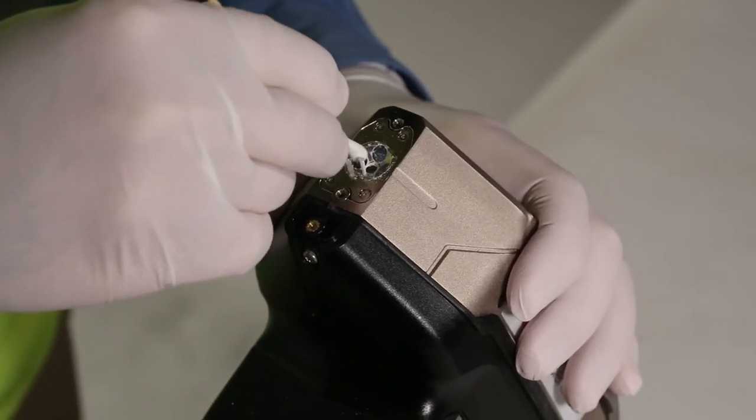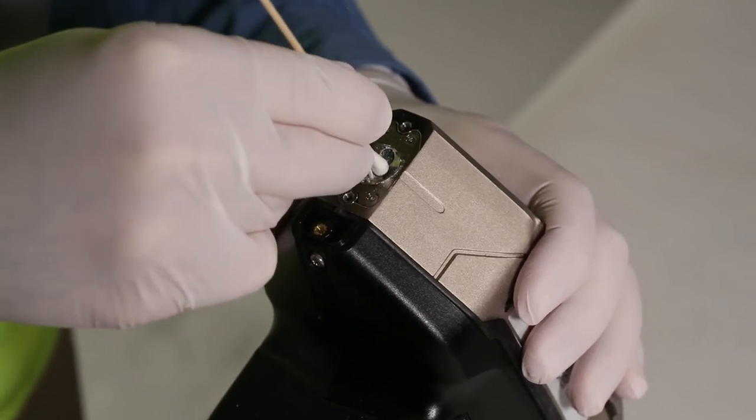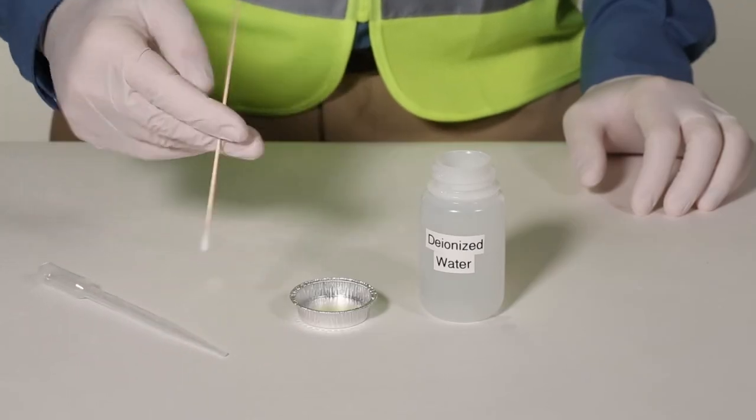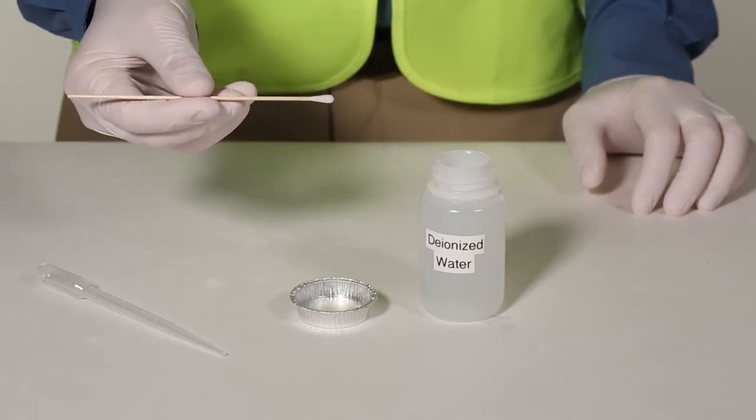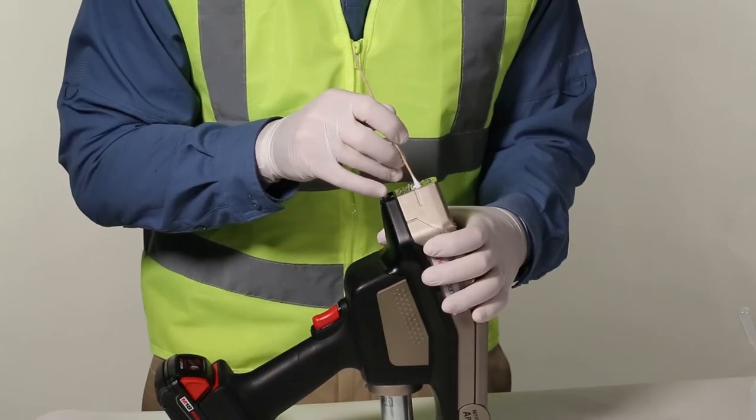Clear any loose or dry cleaning mixture from the sample chamber by using a dry cotton swab. Proceed by dipping a new cotton swab into a small amount of deionized or distilled water and remove any cleaning mixture from the sample chamber.